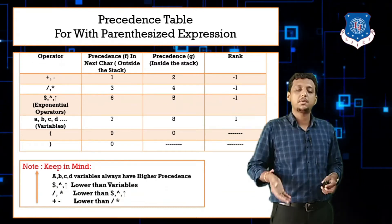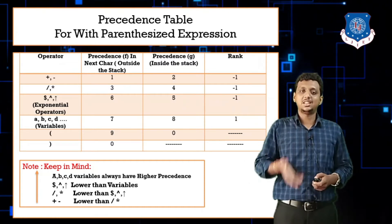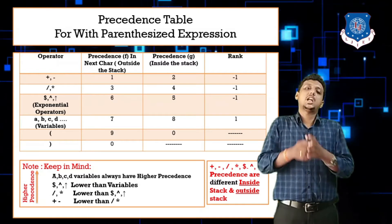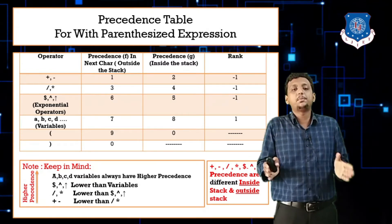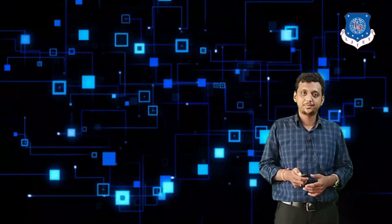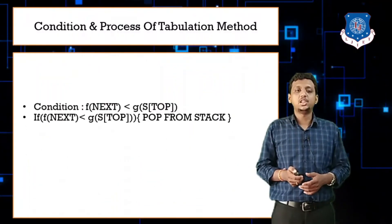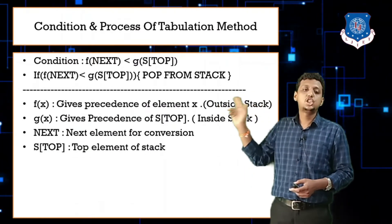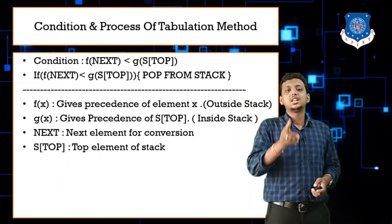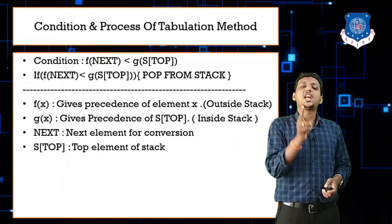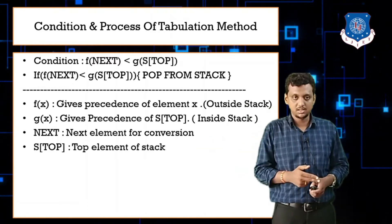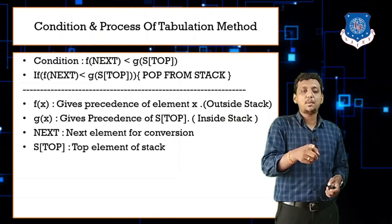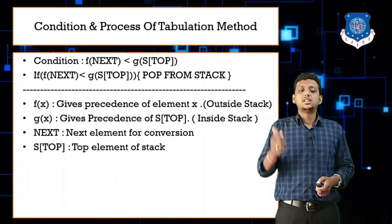From plus and minus up through the exponential operators, the precedence is increasing. Plus, minus, division, star, and dollar/caret all have different precedence inside and outside the stack. The condition is simple: if f(next) is less than g(s[top]) — where g represents inside-stack precedence and f represents outside-stack precedence — then perform the pop operation, else perform the push.